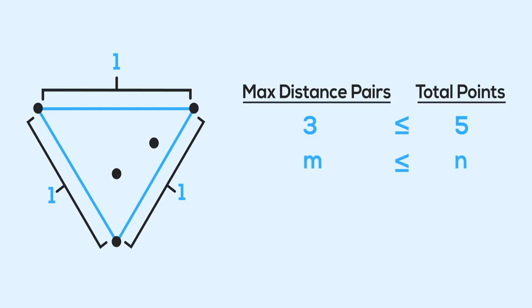For any number of points in a plane, n, the number of pairs with that max distance, m, is always less.